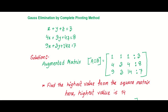Salam alaikum everyone. Today's lecture topic is Gauss Elimination by Complete Pivoting Method. The previous video covered the general Gauss Elimination method, the second video covered partial pivoting, and this third video covers complete pivoting. We have a system of three linear equations to solve using Gauss Elimination by Complete Pivoting Method.